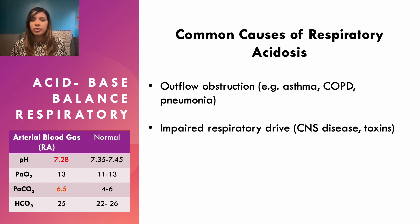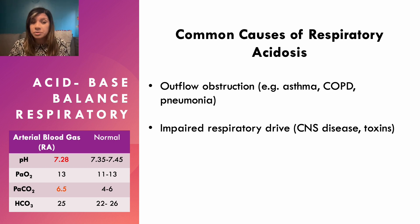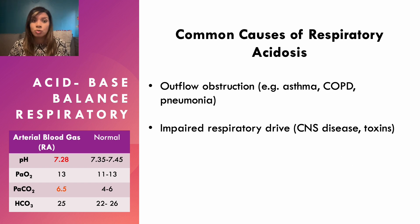On an ABG with respiratory acidosis, the pH will fall below 7.35 and the pCO2 will rise. Causes include anything that obstructs breathing out — asthma attacks, COPD, pneumonia — or anything that affects respiratory drive, such as central nervous system diseases or toxins.